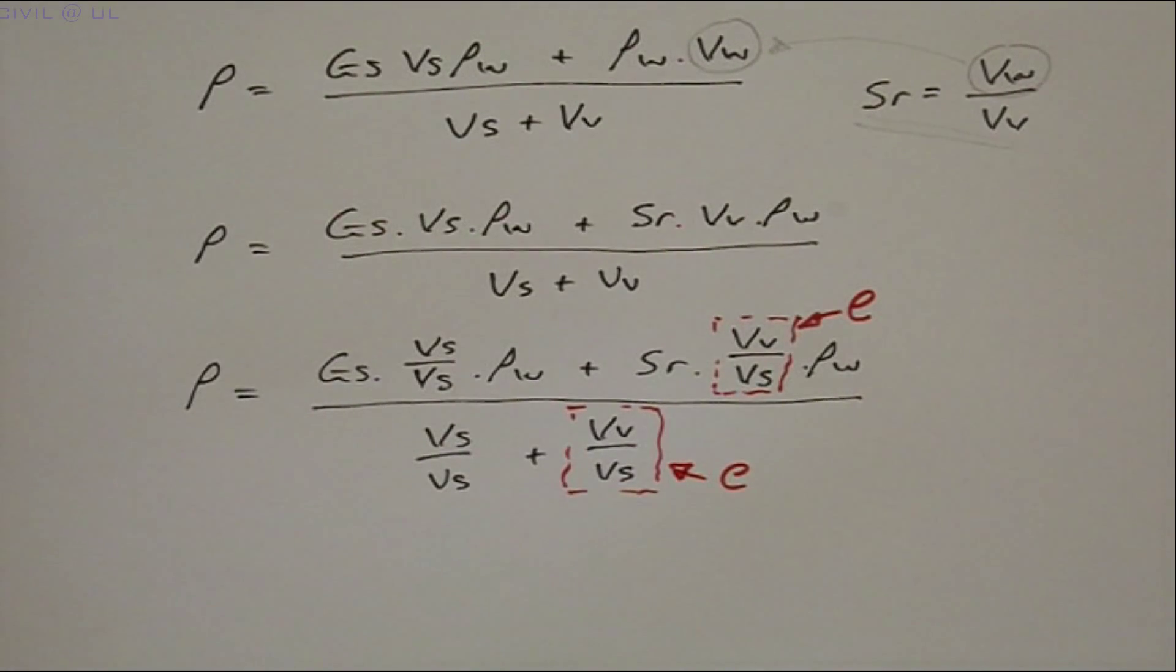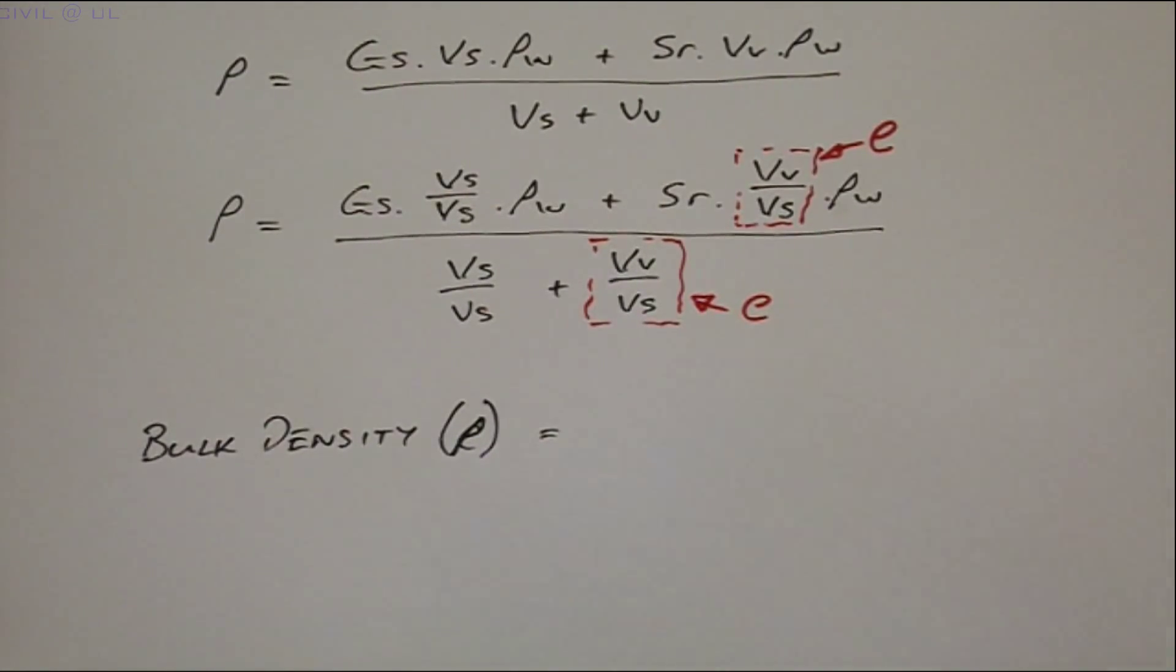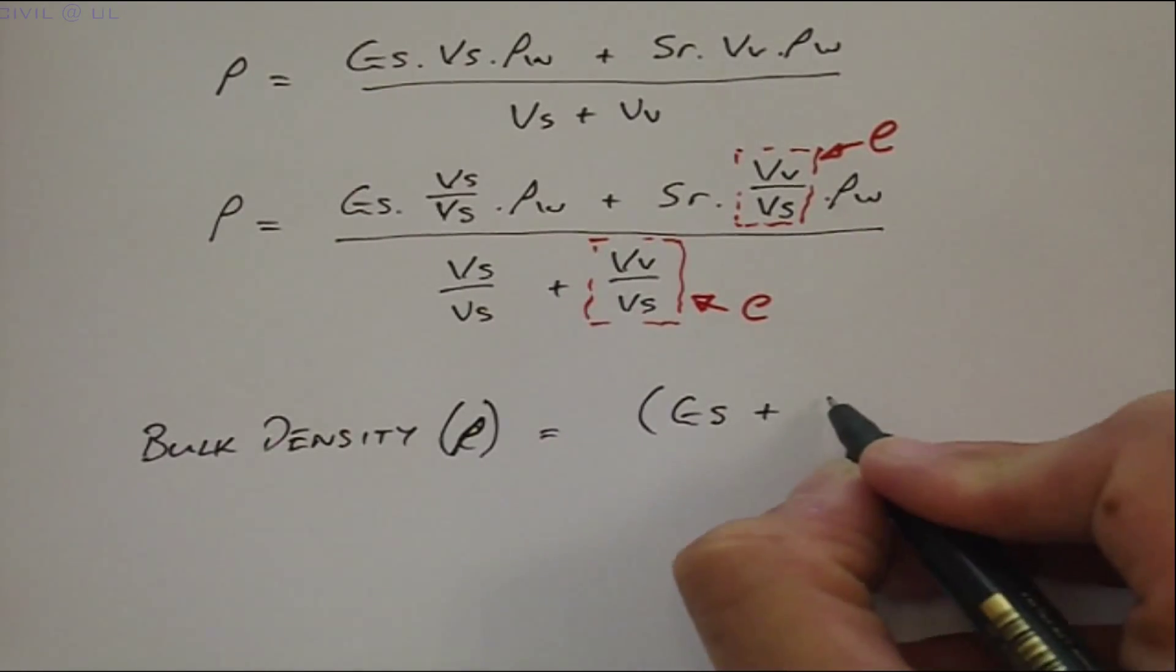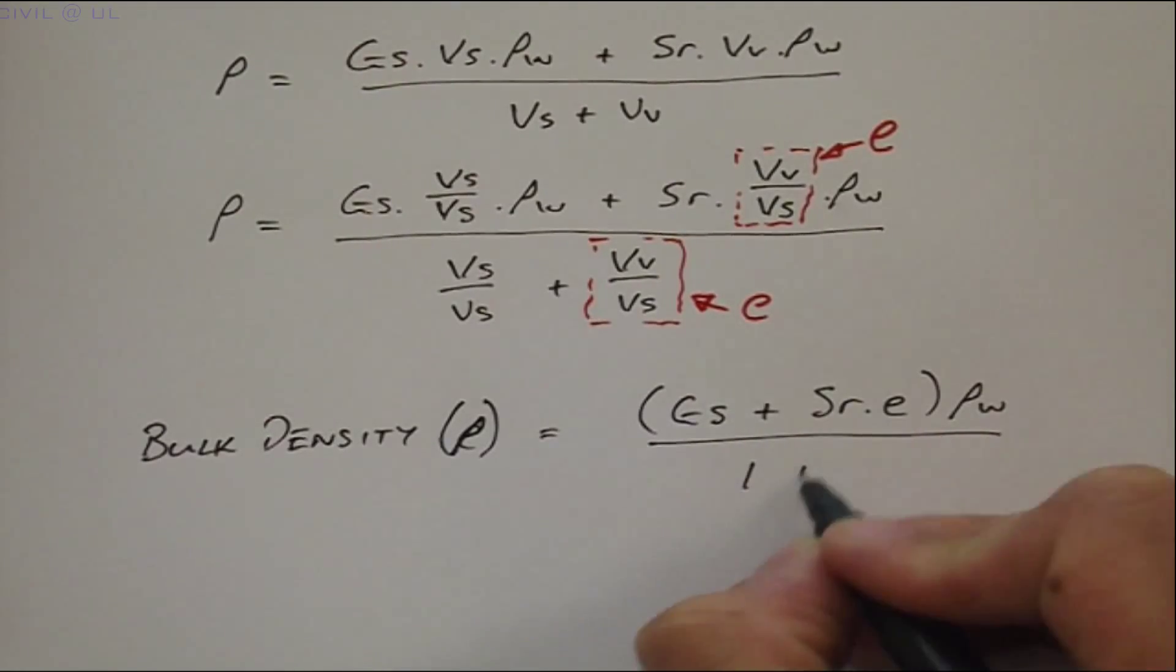And this gives the final expression for the unsaturated or bulk density of the soil, equal to GS plus SR times E, all multiplied by ρW over 1 plus E.